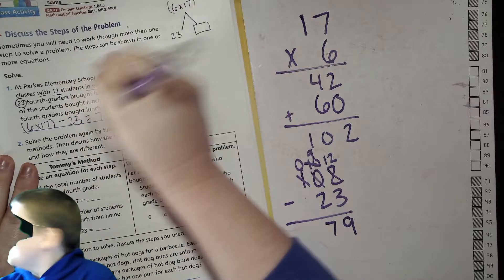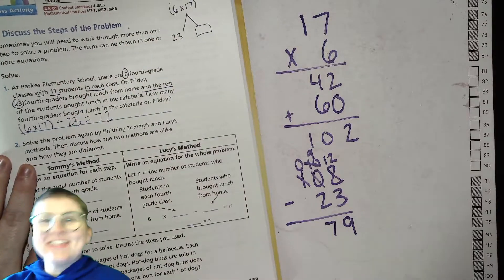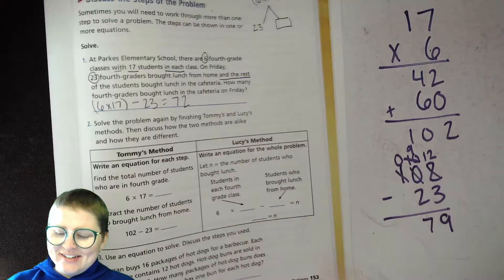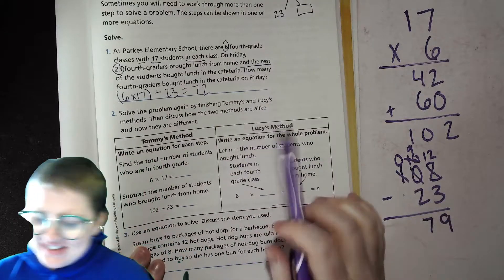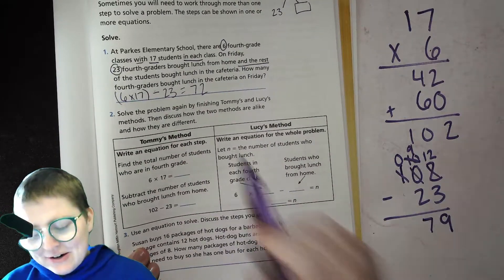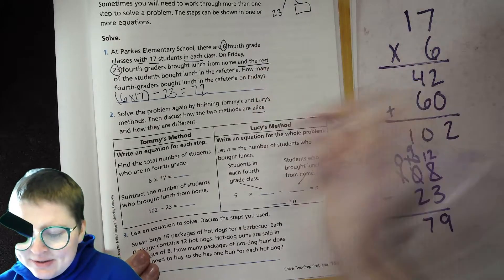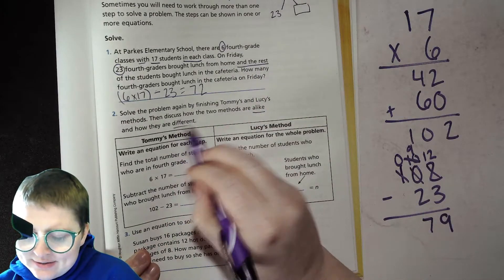It is definitely hailing out there. Oh my gosh. Okay, so that's what we did. Now we're going to look at Tommy and Lucy's methods here. Solve the problems again by finishing Tommy and Lucy's methods, then discuss how the two methods are alike, how they're similar and how they are different.